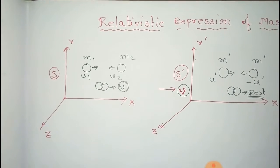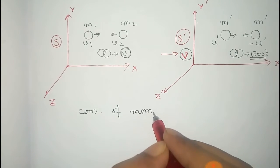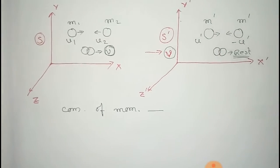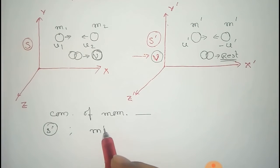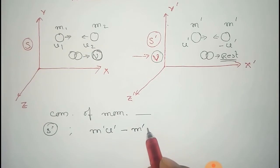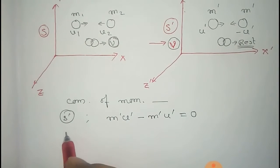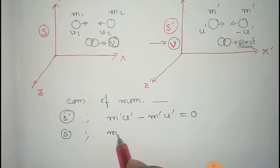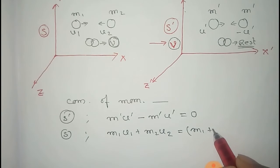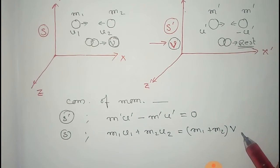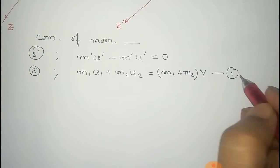We apply conservation of momentum. In the S prime frame, momentum before collision is m prime·u prime minus m prime·u prime, which equals zero. For the S frame, momentum before collision is m1·u1 plus m2·u2, and after collision it is (m1 plus m2) times v, the velocity of the moving frame S prime. We take this as equation number 1.